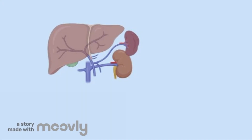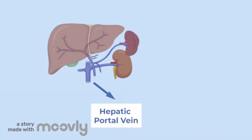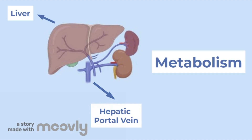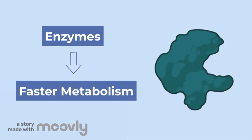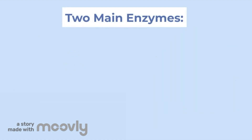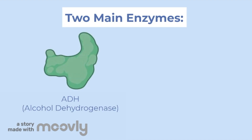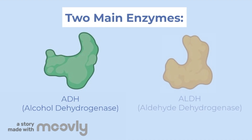Eventually, ethanol makes its way into the hepatic portal vein and reaches the liver, where most alcohol breakdown, also known as metabolism, occurs. Metabolism is often assisted by enzymes, proteins that speed up the rate of chemical reactions. In this case, two main enzymes assist with alcohol metabolism: ADH, which is alcohol dehydrogenase, and ALDH, which is aldehyde dehydrogenase.